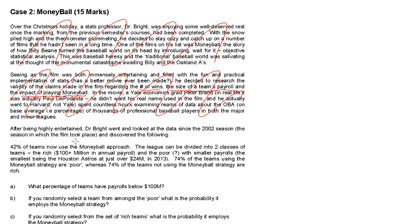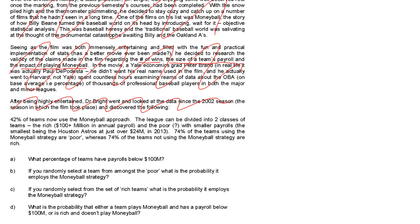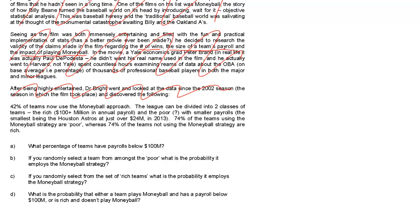After being highly entertained, Dr. Bright went and looked at the data since the 2002 season — the season in which the film took place — and discovered the following. All we need to know there is that this all takes place recently. Now this last paragraph, as I mentioned at the very beginning, is going to contain all of the useful information. It says: 'To begin with, 42% of teams now use the Moneyball approach.' When they give you a percentage, they're giving you a probability — remember, percentage is the same as probability.